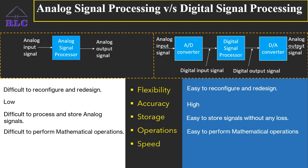Fifth, speed. The processing speed of digital systems is high because of high-speed algorithms. Whereas in case of analog systems, the speed is low. So overall, for processing, digital signals are more accurate. Therefore, all analog signals in nature are converted to digital signals before processing.